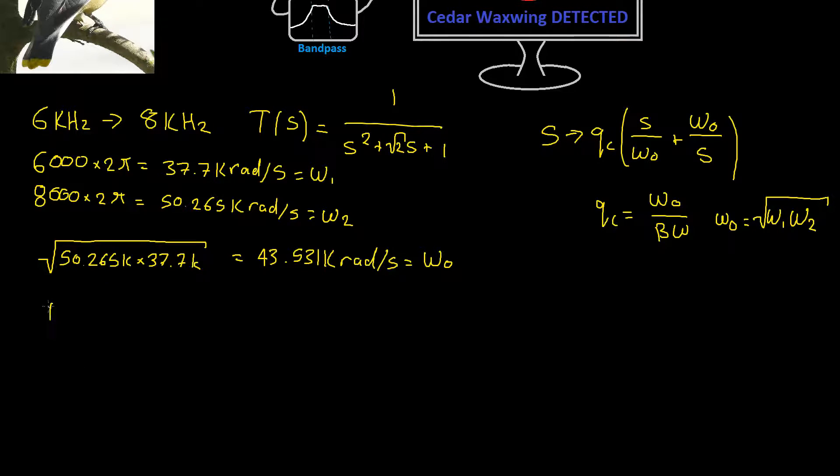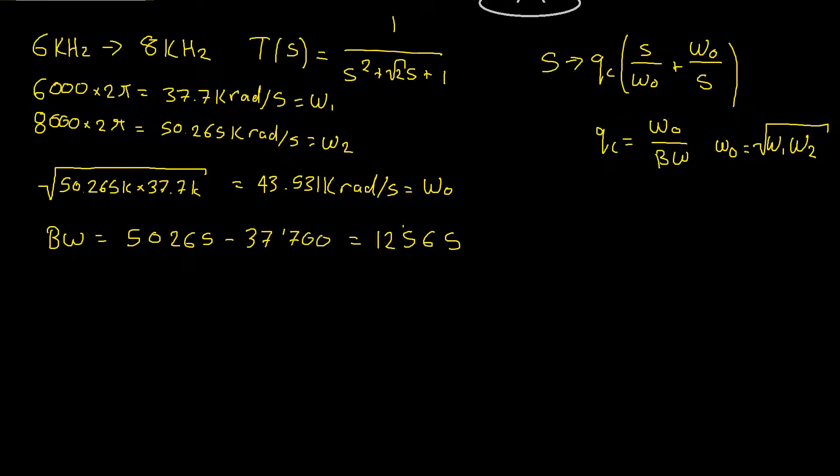Firstly let's quickly calculate our bandwidth. Bw is equal to our upper limit 50.265 minus our lower limit 37.700 and that's equal to 12.565. Okay so now we have omega 0, we have our bandwidth, we can calculate our Qc value and then we can sub that in to our original S transformation and then we can convert our low pass second order Butterworth filter into a band pass filter and hopefully then we'll be able to detect those birds. So let's calculate Qc now. Qc is equal to omega 0 which is 43,531 divided by our bandwidth which is 12,565 and that's equal to 3.46446.